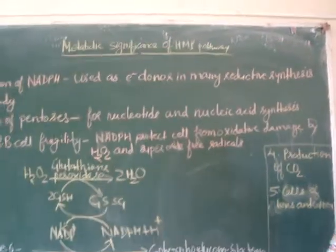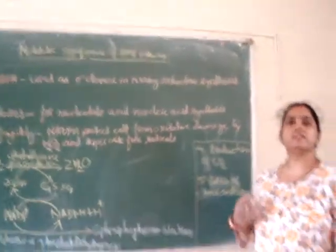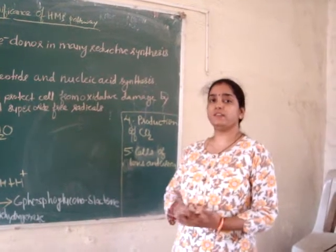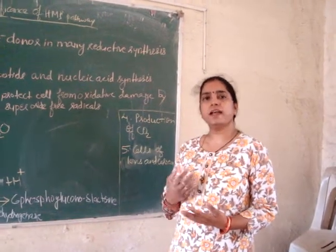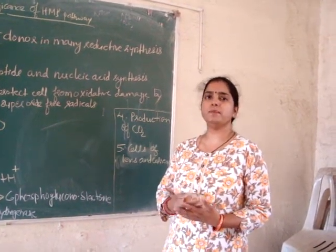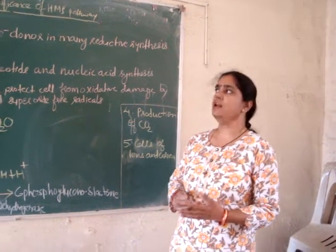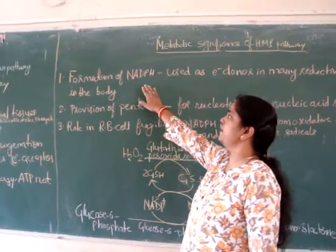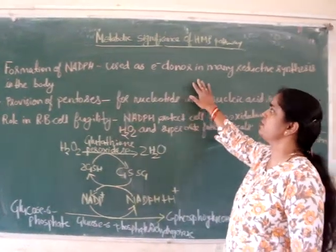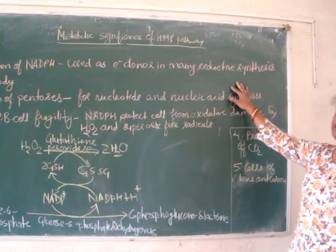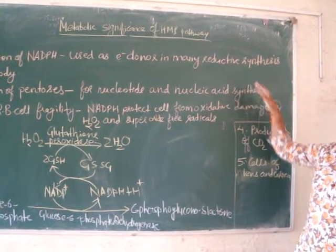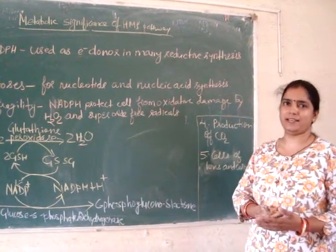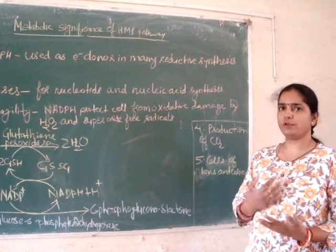As already mentioned, this pathway is not meant for energy production. The end products of this pathway are very important for other processes. For example, one end product is NADPH, which is used as an electron donor in many reductive synthesis reactions in the body — for example, for the biosynthesis of fatty acids and cholesterol.